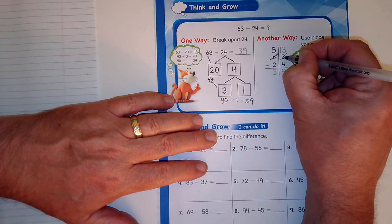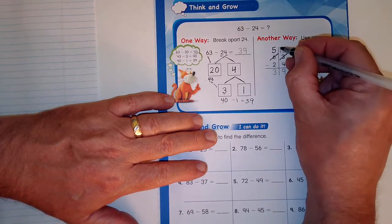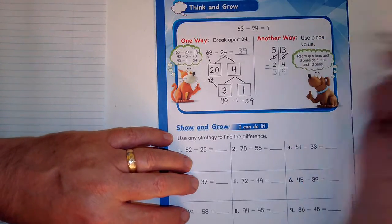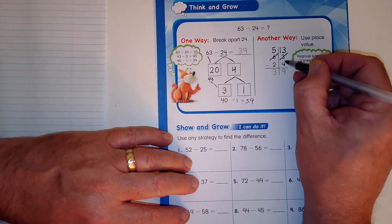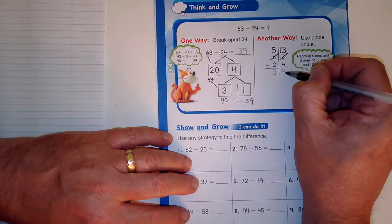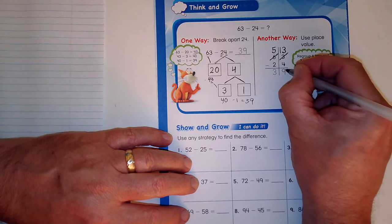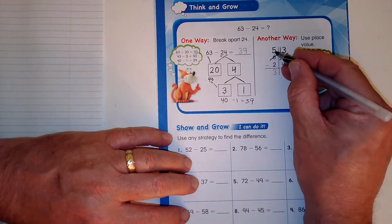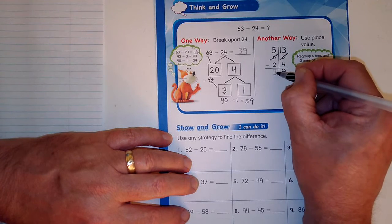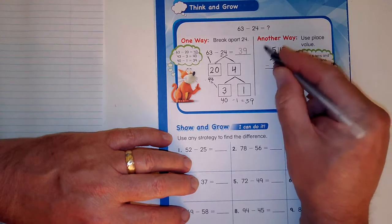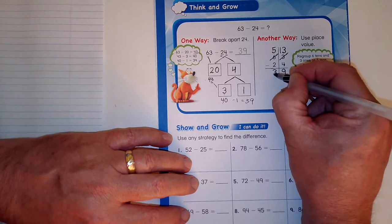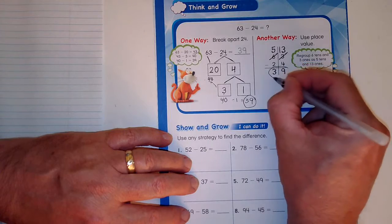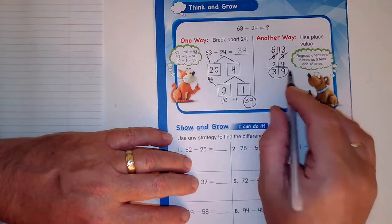That 10 comes over here and we add it to the 3. I no longer have 3. What? 10 plus 3, one set of 10 plus 3 is 13. 13 minus 4, I get to 9. If I say something plus 4 equals 13, then I know that it's 9 also. Addition is the opposite of subtraction. 5 minus 2 is the same as something plus 2 equals 5. That is a 3. I got 39 when I did it this way. I got 39 when I did it this way. They're both the same answer.